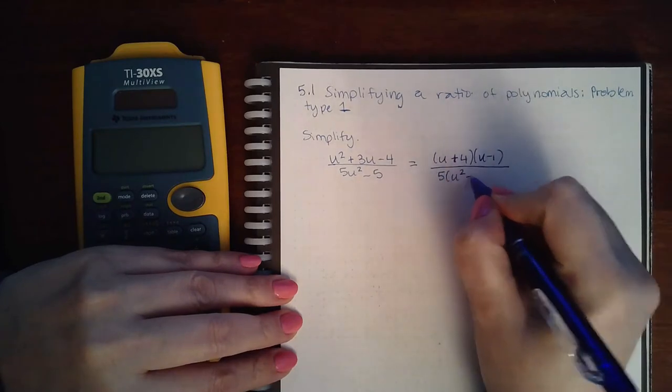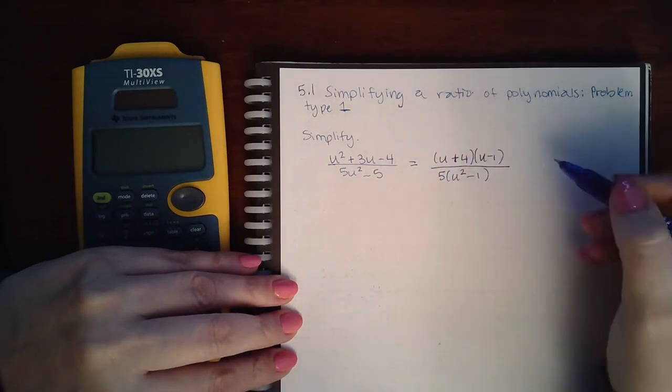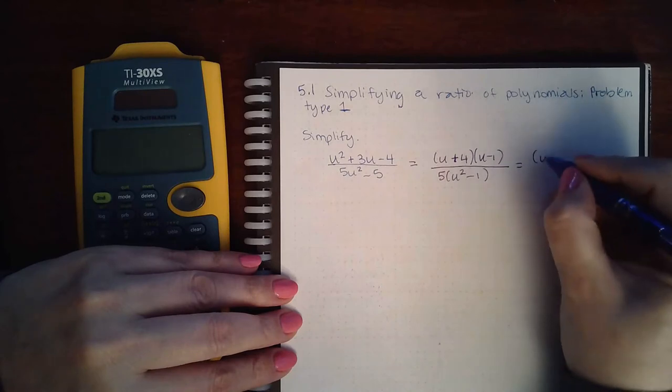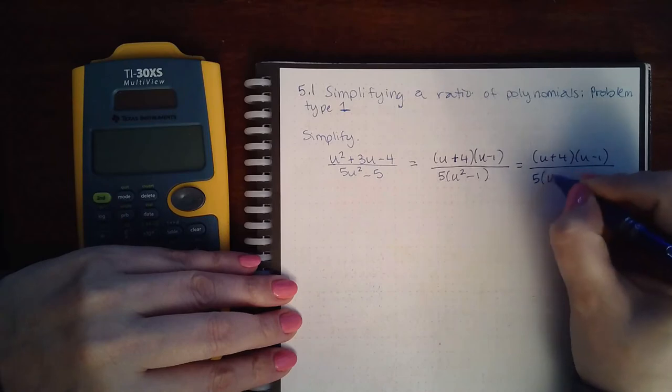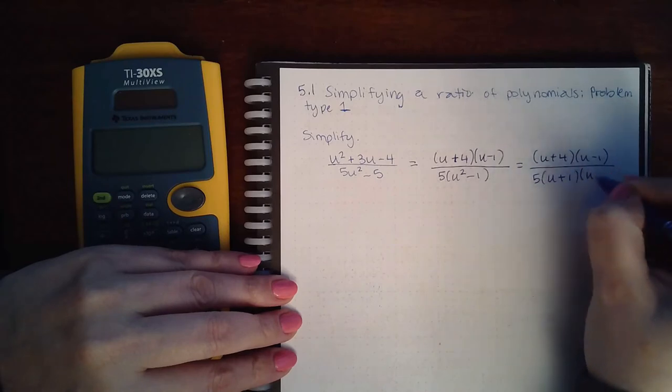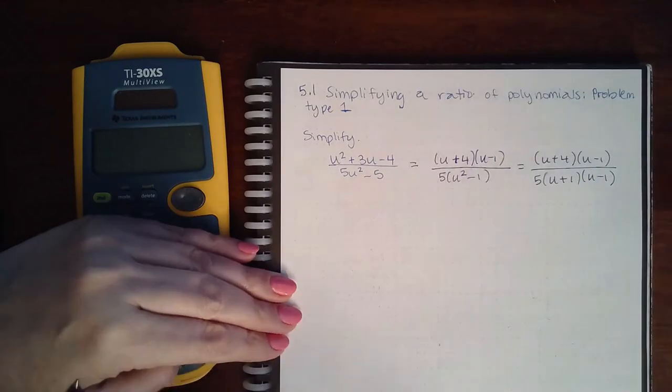And 5 times u squared minus 1 if I factor out the GCF of the denominator. However, I have a difference of squares in the denominator, which means I need to factor that further. And when I do, the u minus 1 factors will cancel.